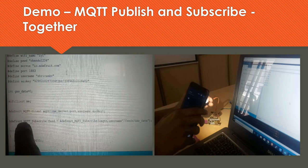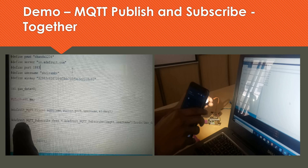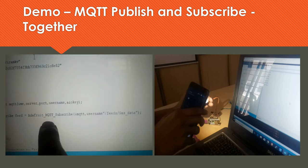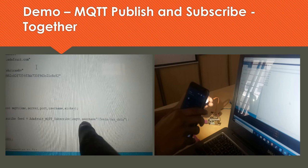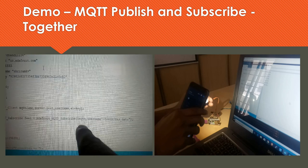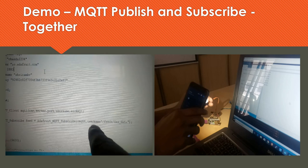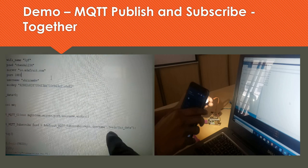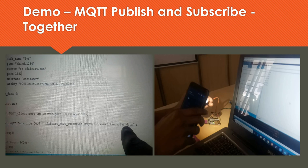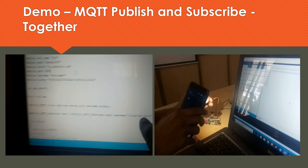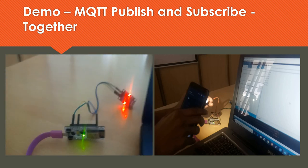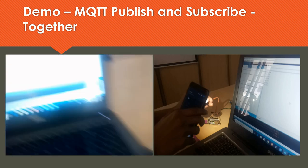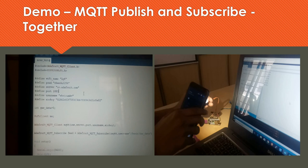The next step is to subscribe to the feed. So AdafruitMQTT_subscribe feed equals AdafruitMQTTSubscribe with MQTT as a parameter, ampersand MQTT username. The username is sriramkv — clearly given — followed by slash feed slash gas_data. This is the feed we are subscribing to, and whatever data is published to this feed will now be retrieved by this subscriber using this subscription.